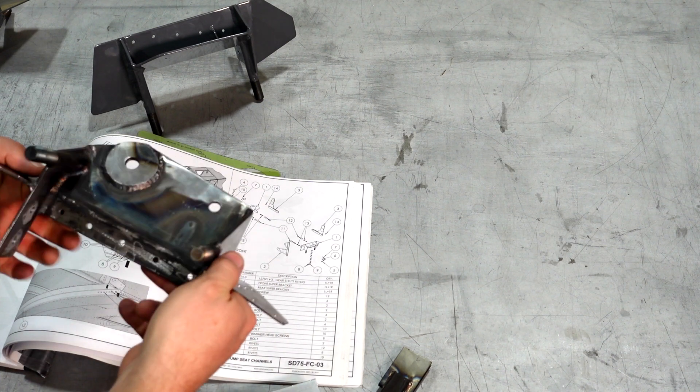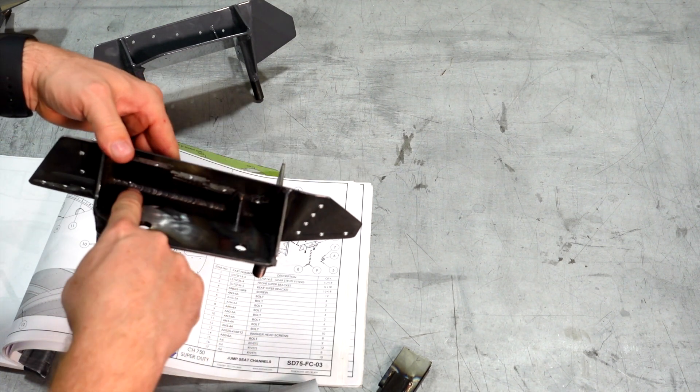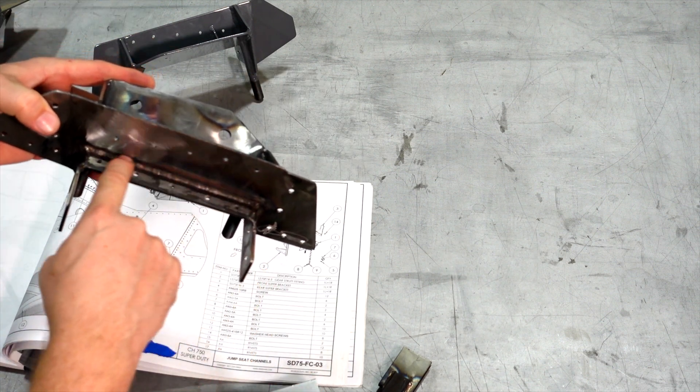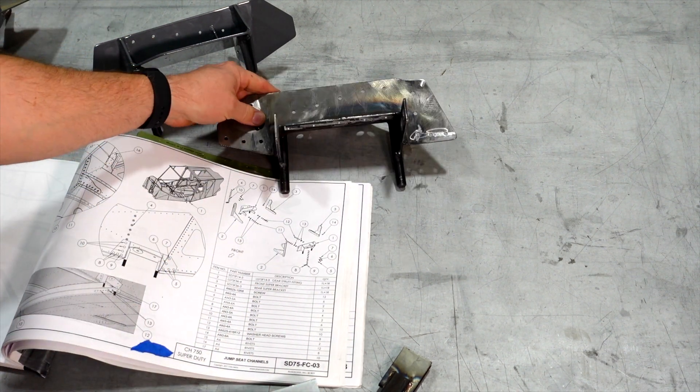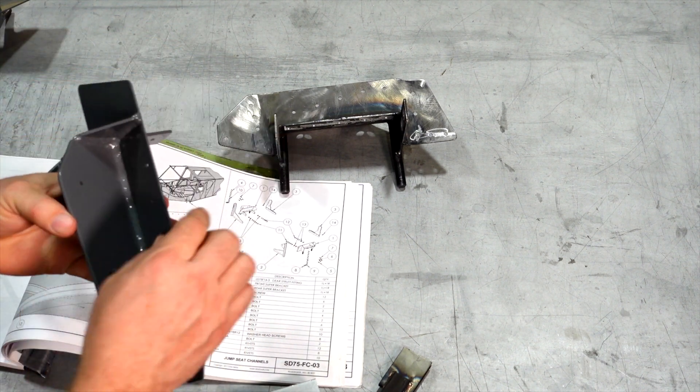So everybody's bracket may be a little bit different. I mean, I'm sure these are built in a jig. You'll also notice that this one has a really nice bead in here, as well as in here.